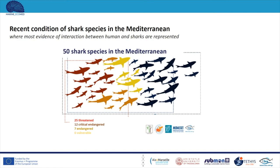Sharks are very vulnerable to over-exploitation because of their life history characteristics: low reproductive and growth rates and long lifespans. This means slow growth, late maturity, and small numbers of young. These characteristics, along with human activities over the centuries — mainly overfishing — have driven sharks to their current critical condition in the Mediterranean Sea. Based on the latest IUCN report, half of the 50 shark species found in the Mediterranean face an elevated risk of extinction: 12 have been characterized as critically endangered, 7 as endangered, and 6 as vulnerable.